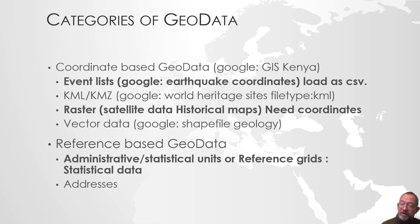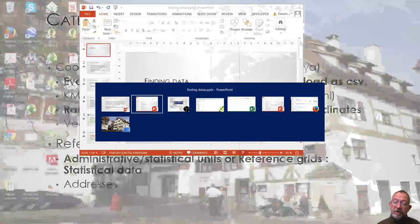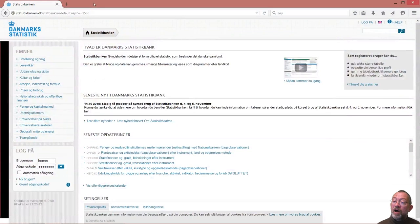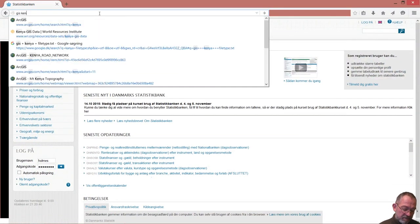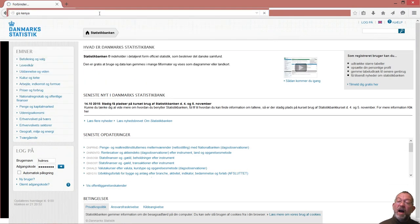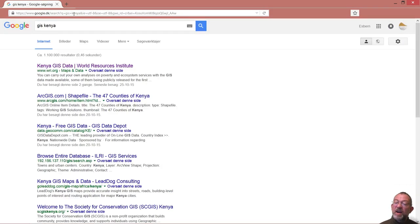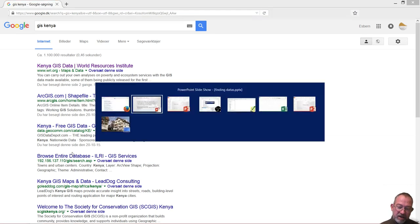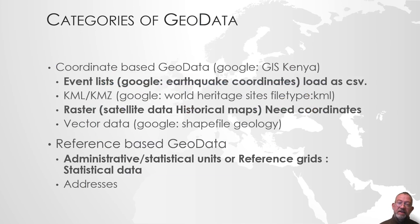A good approach to finding that type of data is simply to Google using the keyword GIS. So if you wanted to look for some data on Kenya, you will see in here 'Kenya GIS' and it will give you a series of references to places where you can find GIS data on Kenya. Basically, as always, Google is your friend, and using the keyword GIS in your search will often give you a reasonable search result.